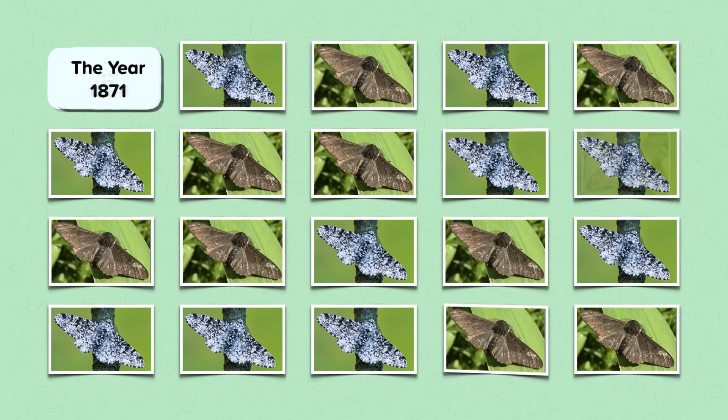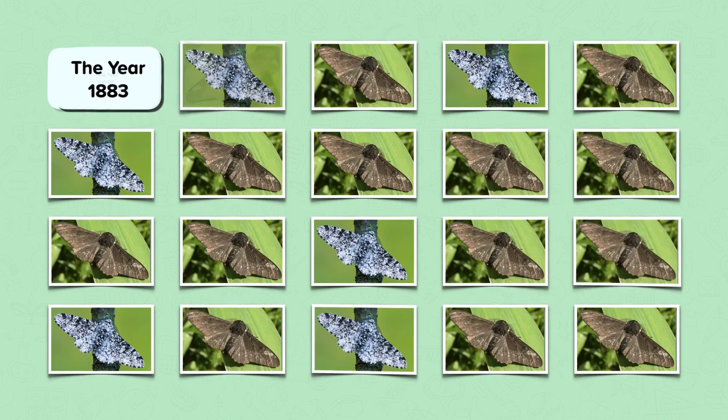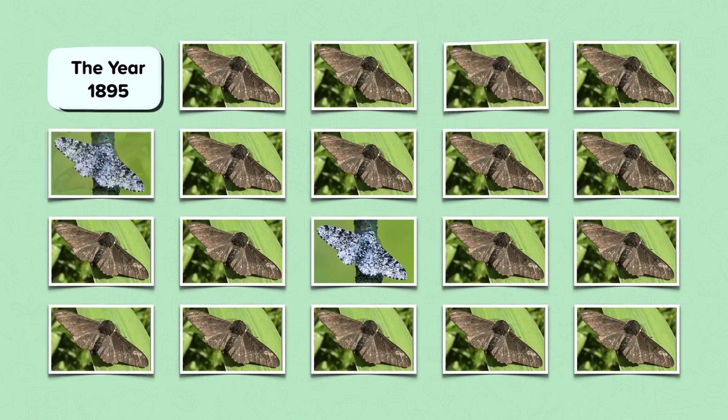By 1895, 98% of the peppered moths in Manchester were black. And this is what we mean by a change in the inherited characteristics of a population — specifically the frequency or proportion of the inherited characteristics. In 1845 all the moths were one colour, but by 1895 they were nearly all a different colour.